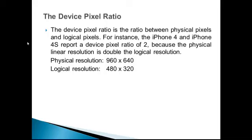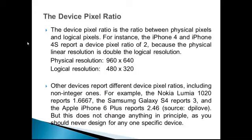For instance, the iPhone 4 and iPhone 4S report a device pixel ratio of two, because the physical linear resolution is double the logical resolution. Physical resolution is 960x640 and logical resolution is 480x320. Other devices report different device pixel ratios, including non-integer ones. For example, the Nokia Lumia 1020 reports 1.667, the Samsung Galaxy S4 reports 3, and the Apple iPhone 6 Plus reports 2.46.